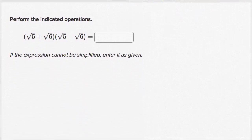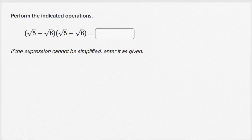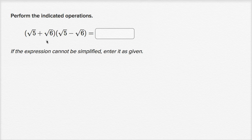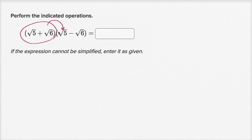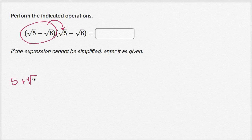Let's do another one — these are strangely fun. Pause it and see if you can work it out on your own. Perform the indicated operations. Let's first multiply using the distributive property twice. We distribute the square root of five plus the square root of six — first multiplying by the square root of five. Square root of five times the square root of five is five, and square root of five times the square root of six is the square root of 30. So that gives five plus the square root of 30.